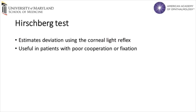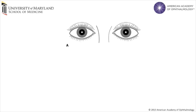The Hirschberg test is a corneal light reflex test useful in patients who cannot cooperate sufficiently to allow for cover testing or who have poor fixation, such as infants. When the patient fixates on a light source, the light reflection should be symmetric in each eye near the center of each pupil. If there is misalignment of the eyes, the corneal light reflection appears asymmetric and off-center in the deviating eye. Every one millimeter of displaced light reflex corresponds to roughly 15 diopters of deviation.